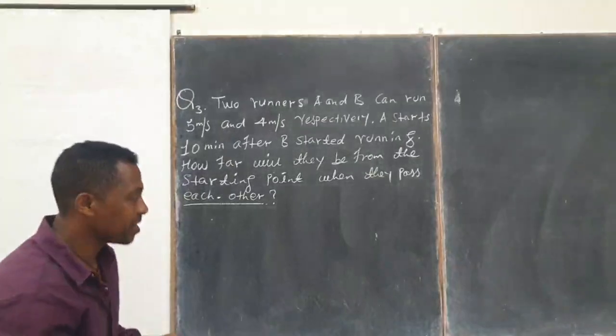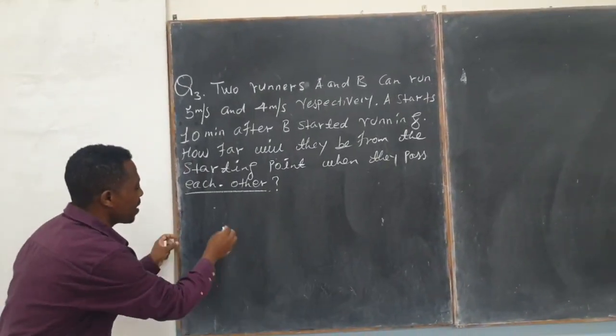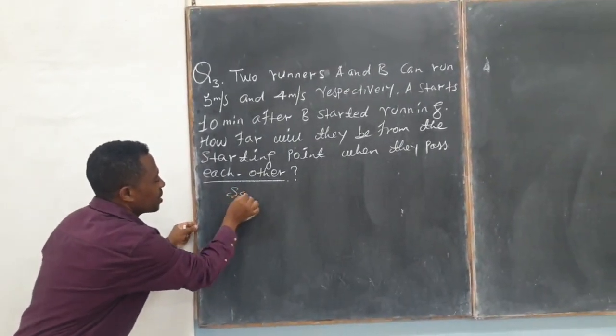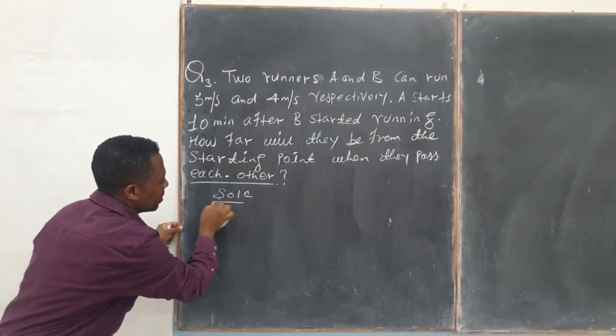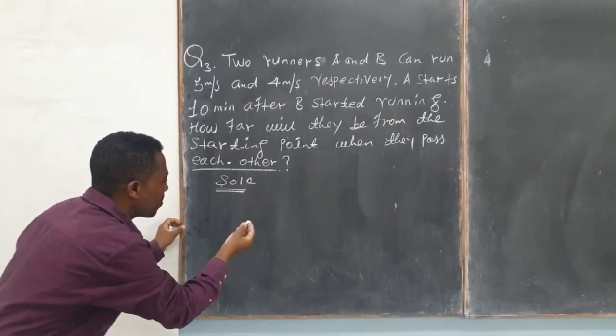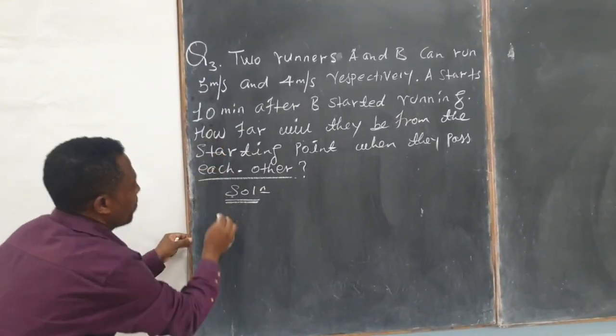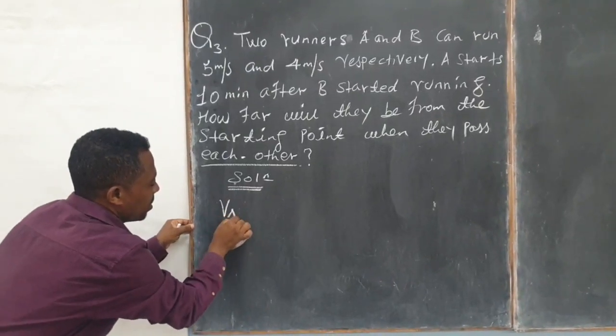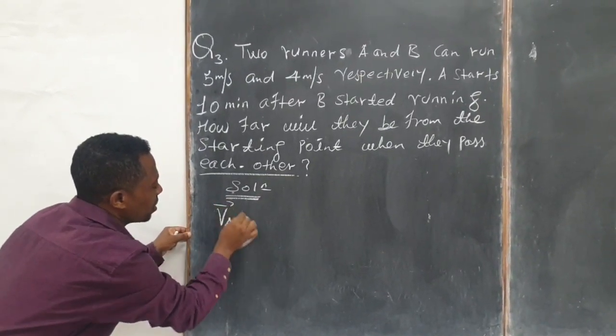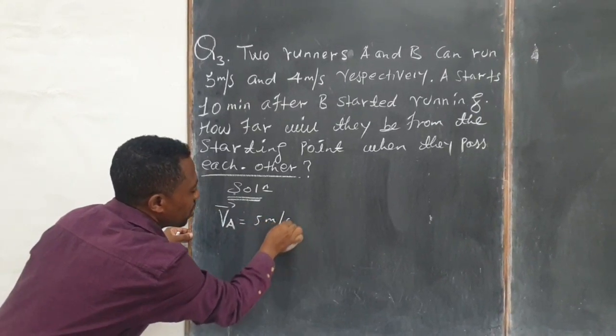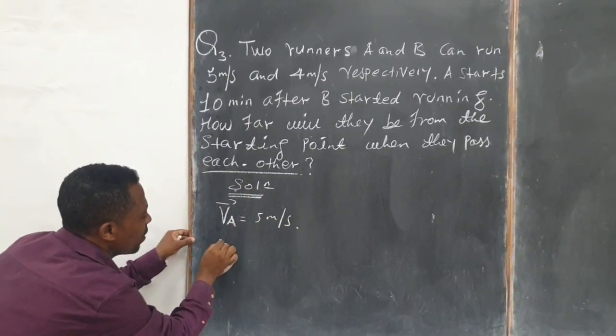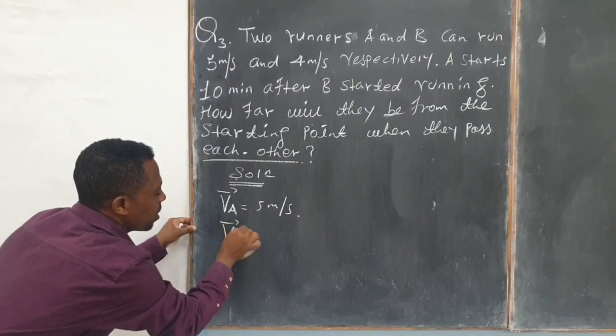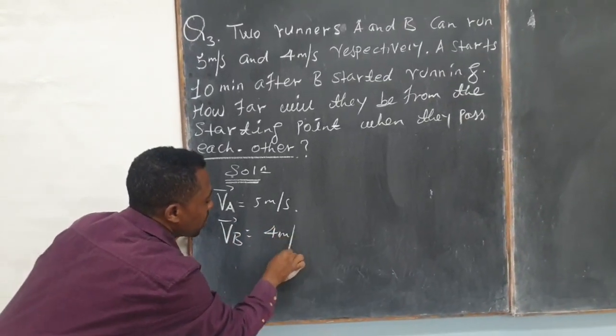Right. Look, my dears. Let's give the solution. Runner A runs at velocity of five meter per second and the velocity of runner B is four meter per second, correct?